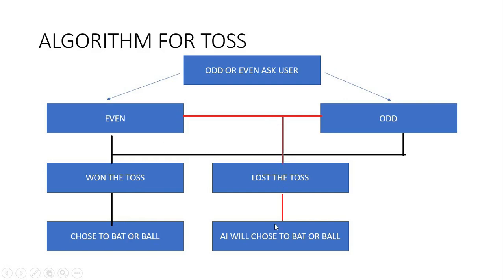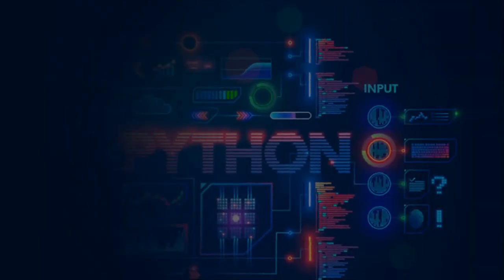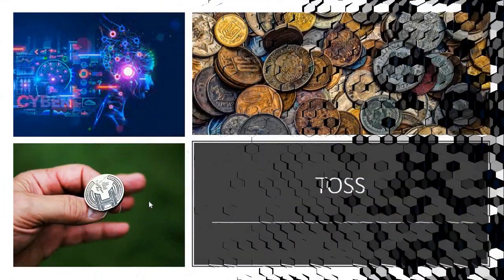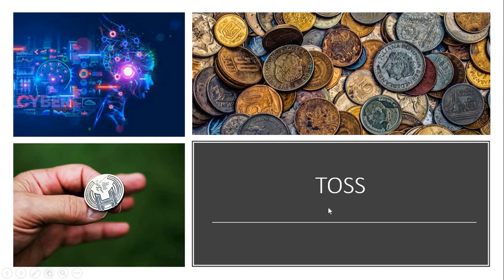How do we implement this in Python? It's really simple. There are four steps which we follow. First is the toss. Without wasting any time, let's start programming for the toss.